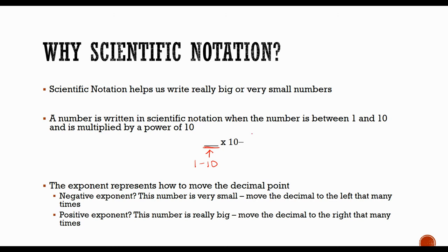Times 10 raised to an exponent value. That exponent is going to represent how many times we had to move the decimal to get that value to be between 1 and 10. If it's a negative exponent, it means this number is going to be really small and that's how many times we had to move to the left. And if it is a positive exponent, this number is really big and that's how many times we would need to move it to the right to create our original standard form.